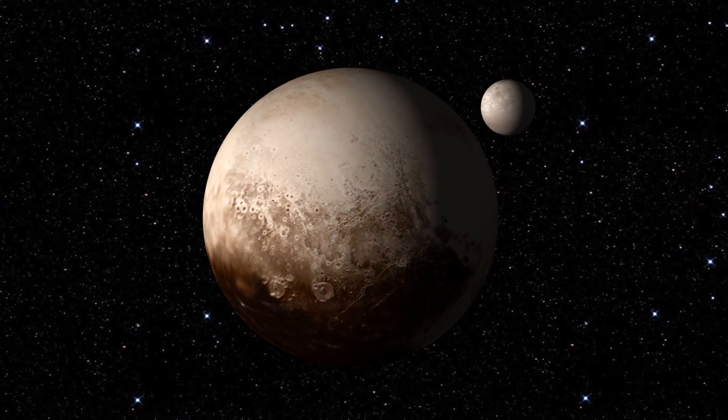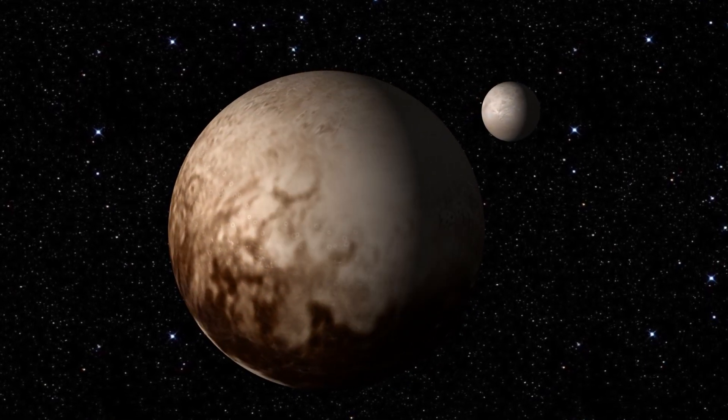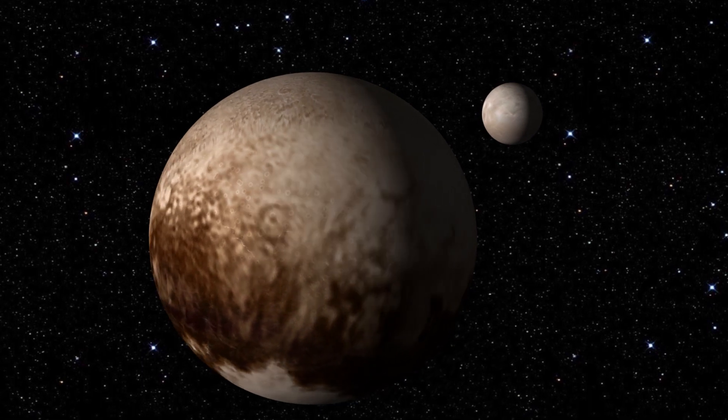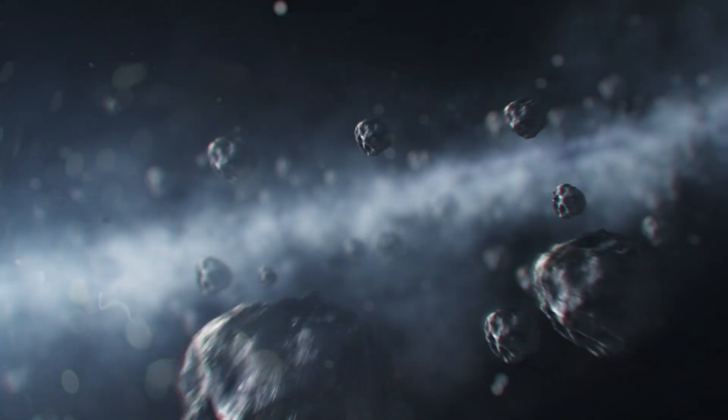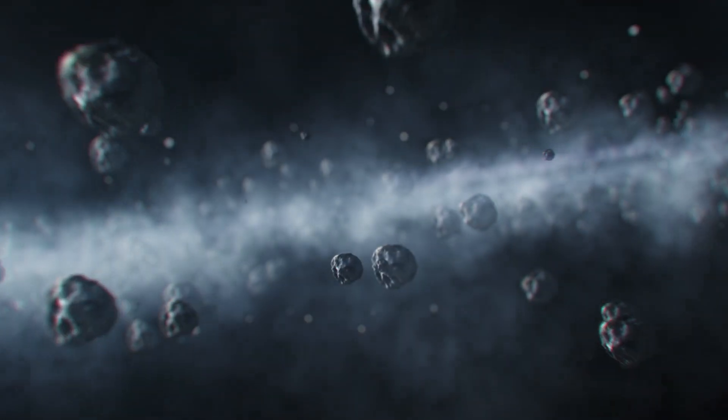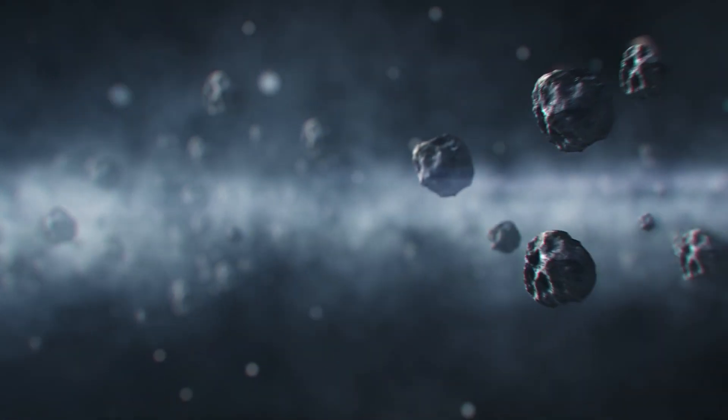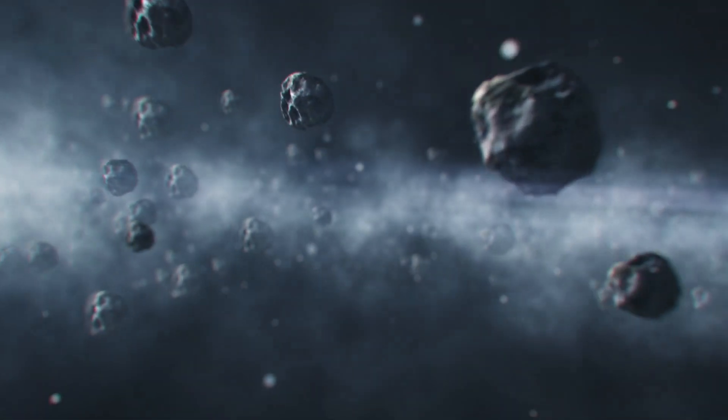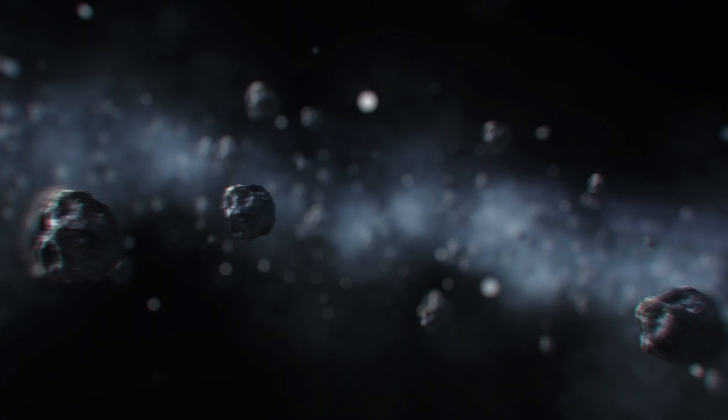In 1930, the discovery of the then ninth planet Pluto expanded the solar system further out. We now know Pluto itself is part of the wider Kuiper Belt, a distinct ring of small bodies primarily composed of frozen volatiles such as methane, ammonia and water, leftover remnants from when the solar system was forming.